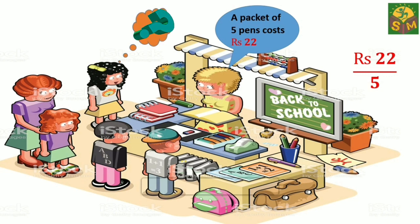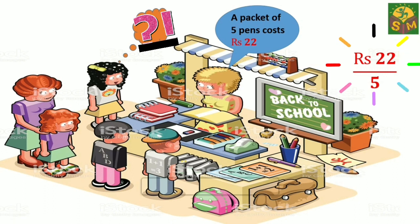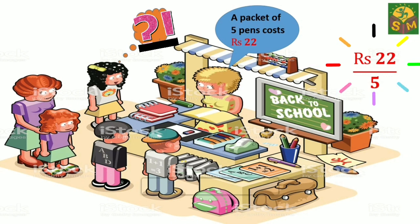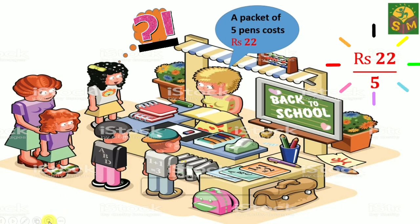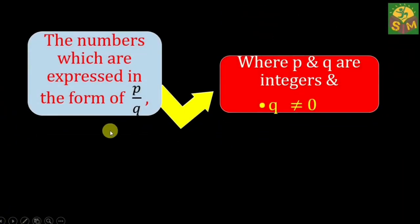But Sanna wants to organize and represent her thinking before she tackles the division. Is there any whole number or integer to represent this cost? No. Let us discuss such types of numbers — these numbers are called rational numbers. The numbers which are expressed in the form of P divided by Q, where P and Q are integers and Q is not equal to zero, are called rational numbers.